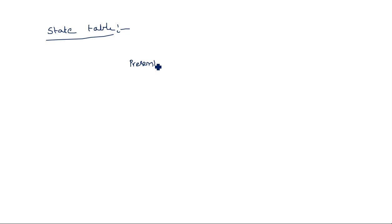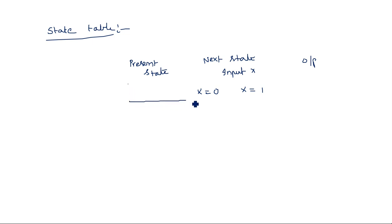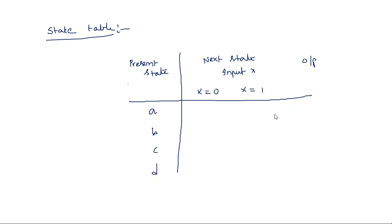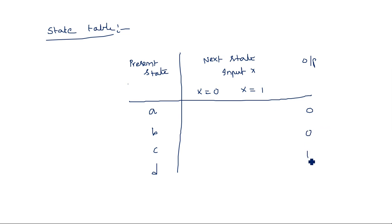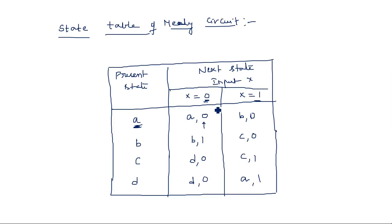The state table of the Moore circuit has columns for present state, next state (for X=0 and X=1), and output. The output is fixed per state: A=0, B=0, C=1, D=0 — irrespective of the input. For state A: X=0 stays at A, X=1 goes to B. For state B: X=0 stays at B, X=1 goes to C. For state C: X=0 goes to D, X=1 stays at C. For state D: X=0 goes to next state, X=1 stays at D. In Moore, both state and input do not jointly influence the output — only the state does.